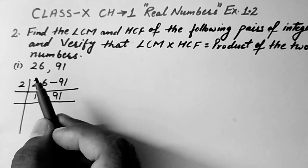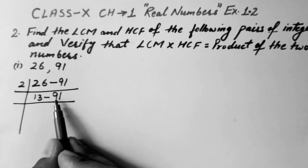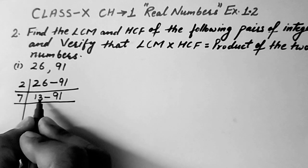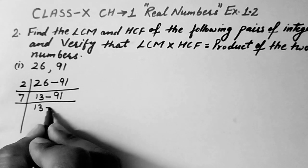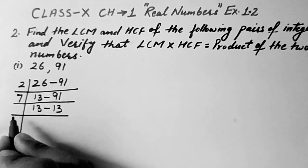Now next 91 is not going with 3. It is going with 7. So 13 is not going with 7. We will write 13 as it is and 7 thirteens are 91. So now these both are 13.